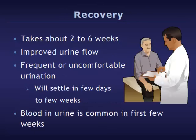Recovery from TURP takes about two to six weeks. You should notice an immediate improvement in urine flow. Urination may be frequent and mildly uncomfortable during the recovery period, but frequency and pain will gradually diminish over the first few days to weeks. It is also not unusual to see a small amount of blood in the urine — remember it can look worse than it really is, but bleeding should not be continuous.